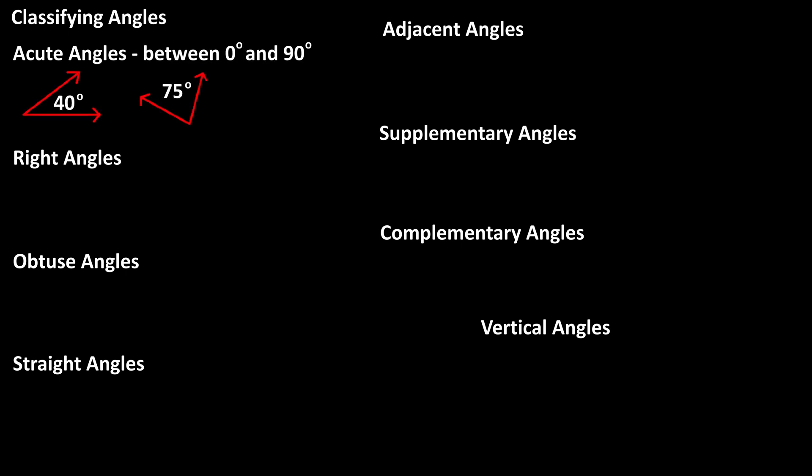An acute angle is an angle that's measurement is between 0 and 90 degrees. A right angle is an angle that measures 90 degrees, and a little box is drawn at the vertex to note a right angle.